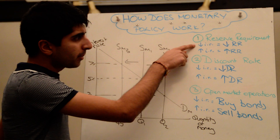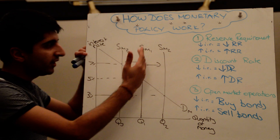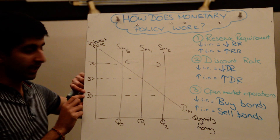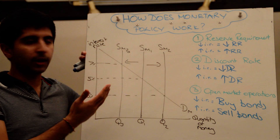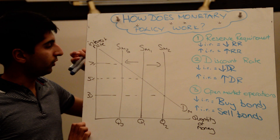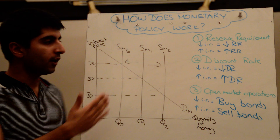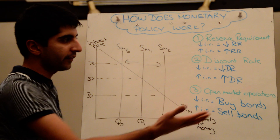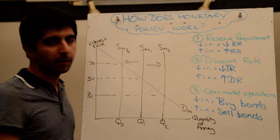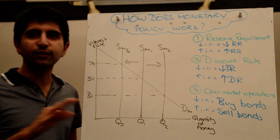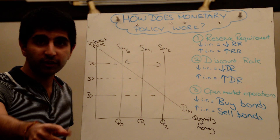So anytime we talk about reducing or increasing interest rates, it's all about manipulating the supply of money — shifting the supply of money to the right to reduce interest rates, or reducing the supply of money to raise interest rates to 7% in this case. Increasing supply of money reduces interest rates; reducing supply of money raises interest rates. Three tools available: in the UK, it's the discount rate used very heavily; in the US, it's open market operations. And that's how interest rates change in the economy. Thanks for watching, see you next time.